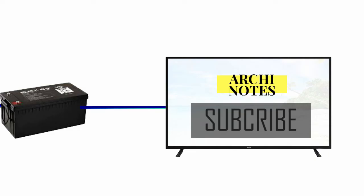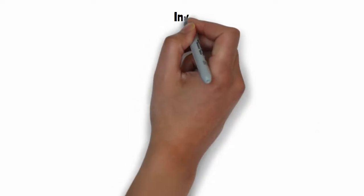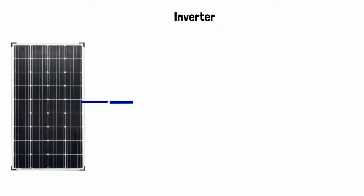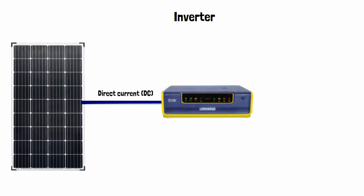The electricity solar panel produces is in direct current but for home alternating current is needed. Inverter is device that converts direct current into alternating current.